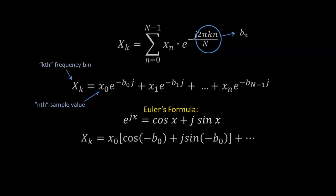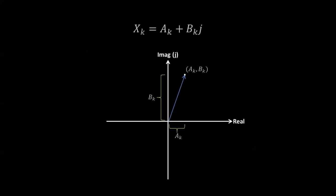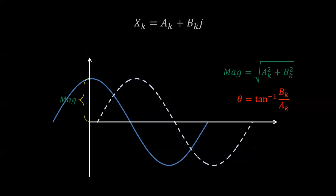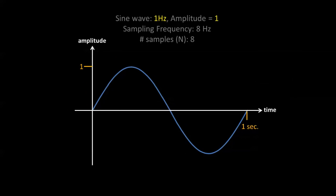How do we use this complex number? You can plot it on a complex plane using the real and imaginary parts as coordinates. Once plotted, you can extract the vector's magnitude using the Pythagorean theorem, and extract the phase — or angle — using an arctangent. The magnitude corresponds to the amplitude of the sinusoid at that frequency bin, and the phase corresponds to how much that sinusoid is shifted. The best way to understand all of this is to work through an example.